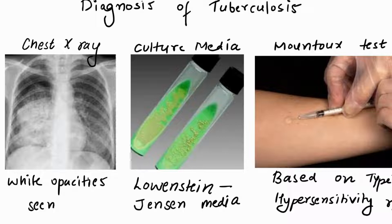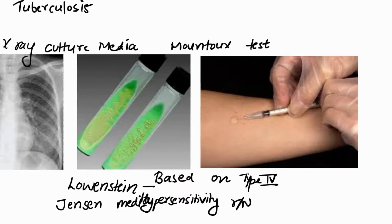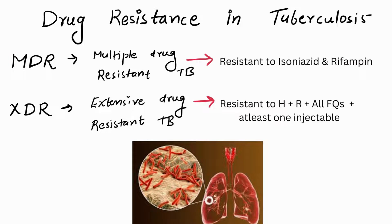To diagnose tuberculosis, your doctor runs certain tests including chest X-rays and sputum culture — the culture media used is Löwenstein-Jensen media. We also have a Type 4 hypersensitivity-based test known as the Mantoux skin test. For TB, early diagnosis is the key to effective treatment.